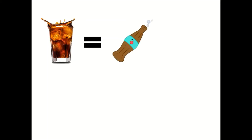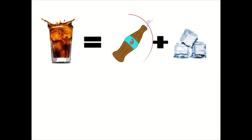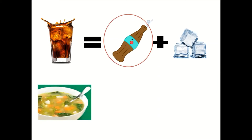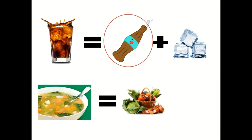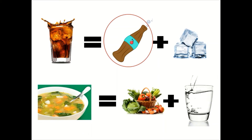Ice cube in soda is a mixture of soda and ice cubes. Which do you think is the most abundant ingredient? That's right, it is the soda. How about in vegetable soup? We all know that it is made up of different kinds of vegetables and water. Which do you think is the most abundant component? That's right, it is the water.